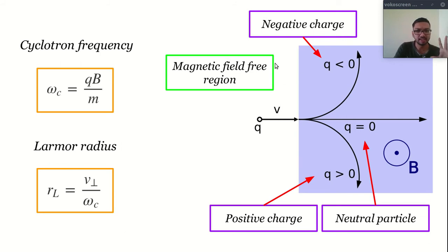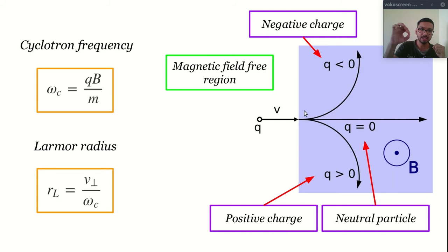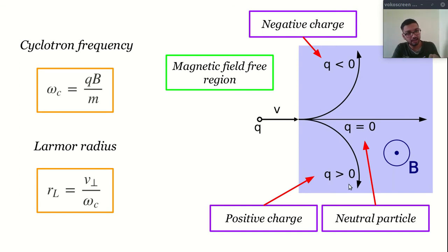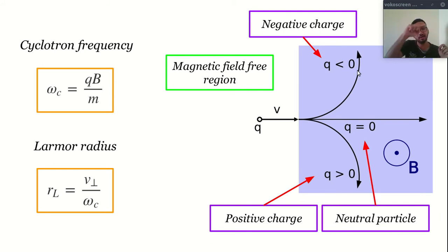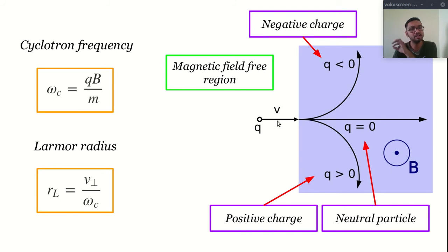Now consider this case. This is a magnetic-field-free region, and the particle has some velocity in this direction. If such a particle enters a region having some finite magnetic field, then if it has a positive charge it will turn in a counterclockwise direction, and if it has a negative charge it will move in an anticlockwise direction. And obviously, if it is a neutral particle — if charge equals zero — then it won't interact with our magnetic field and will simply pass through.